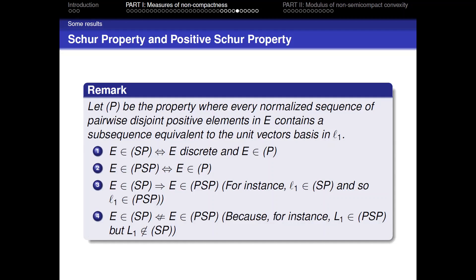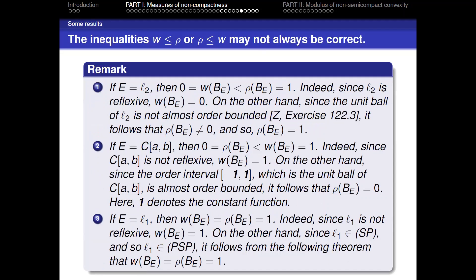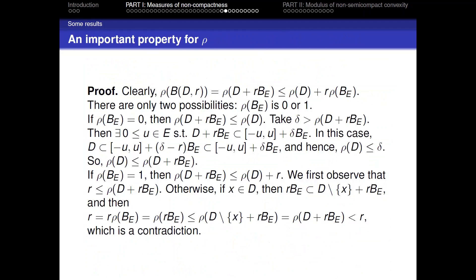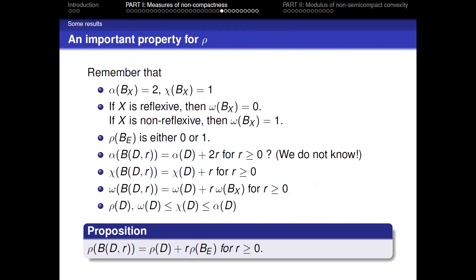The proof is in Zaanen's book, Riesz Spaces 2. Now there is a question: if you recall the relations among ρ, ω, χ, and α, we have no established relation between ρ and ω. We don't know whether such a relation exists or not.